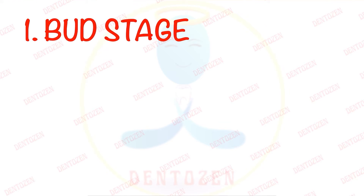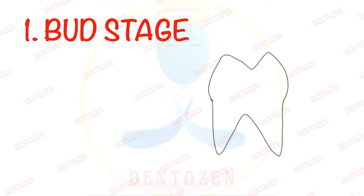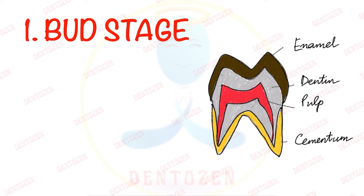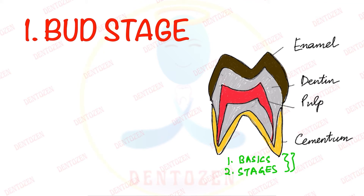Hi everyone, welcome back to Dental Zen. Today we are here with a new video where we are going to continue with our very important topic of dental histology — that is tooth development. We have already discussed this topic in the previous two videos. In the first video we discussed the basics of tooth development and in the second video we discussed the names of the morphological stages of tooth development. I strongly recommend you to go through these two videos, the links for which are provided in the description box below.